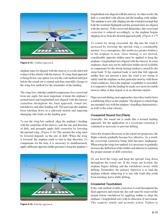Crosswind Final Approach. The crab method is executed by establishing a heading (crab) toward the wind with wings level so that the airplane's ground track remains aligned with the centerline of the runway. This crab angle is maintained until just prior to touchdown, when the longitudinal axis must be aligned with the runway to avoid sideward contact of the wheels. If a long final approach is being flown, one option is to use the crab method until just before the roundout is started and then smoothly change to the wing-low method. The wing-low (side-slip) method keeps the airplane's ground track and longitudinal axis aligned with the runway centerline throughout the final approach, roundout, touchdown, and after-landing roll, preventing the airplane from touching down in a sideward motion and imposing damaging side loads on the landing gear.